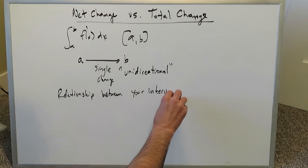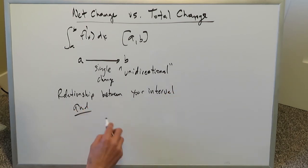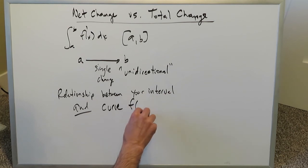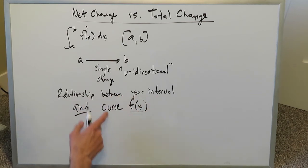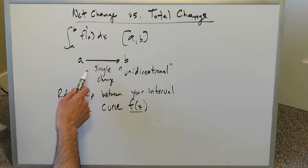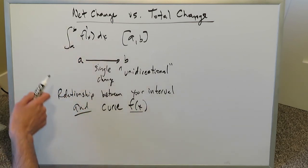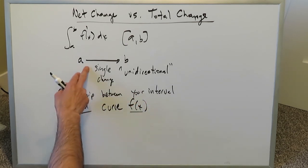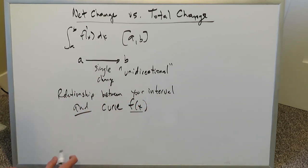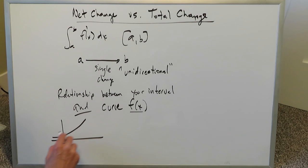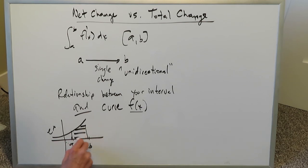The most important thing is the relationship between your interval and your curve — assuming the curve is a function. You must clearly examine that relationship to know whether the movement from a to b, for your derivative or rate of change going through integration, is truly uni-directional or not. For example, an exponential curve over interval a to b with all positive area represents a single directional change.